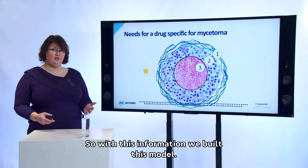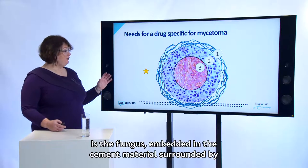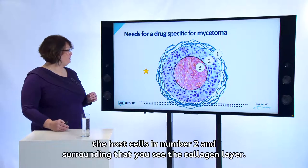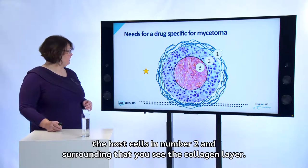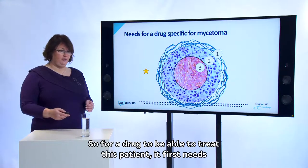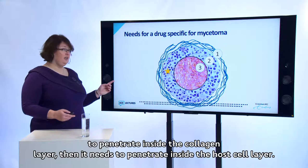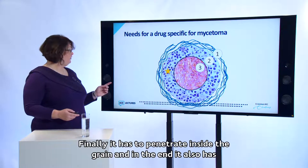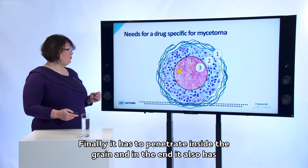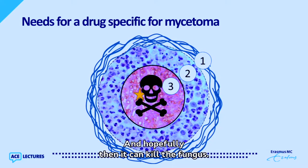With this information we built a model: at the inner core is the fungus embedded in cement material, surrounded by host cells, with a collagen layer around that. For a drug to treat this patient, it first needs to penetrate the collagen layer, then the host cell layer, then inside the grain, and finally inside the fungal cell within the grain — and hopefully then it can kill the fungus.